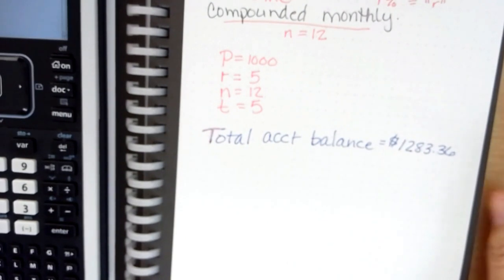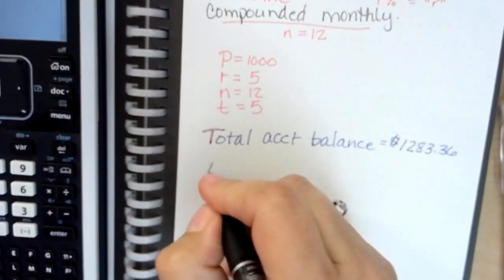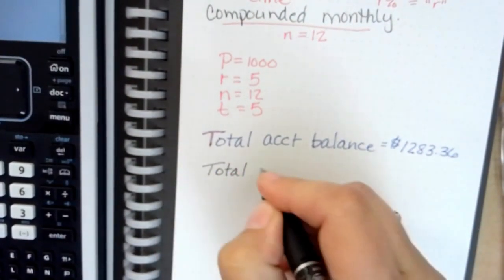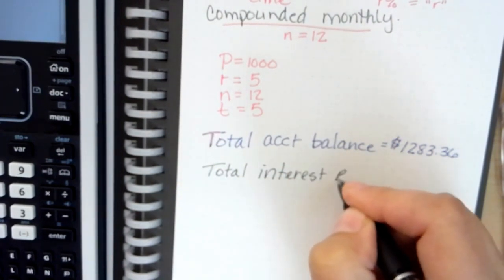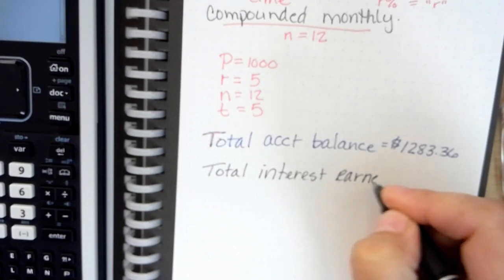Now that means that our total interest earned is going to be the difference between what we started with.